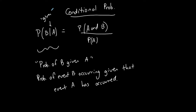The vertical line is not a fraction bar — it is a vertical line meaning 'given.' So in P(B|A), the event after the given line, event A, is always the event that has already occurred.